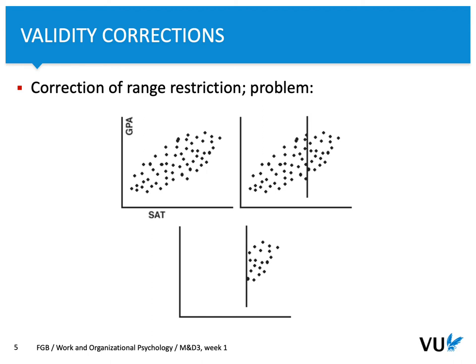This problem is called the problem of range restriction. It means that in some cases, when not the whole group is available, we can face the problem of a changed relationship between the predictor and the criterion. That usually happens in the work context.